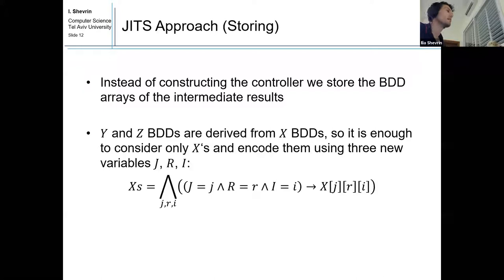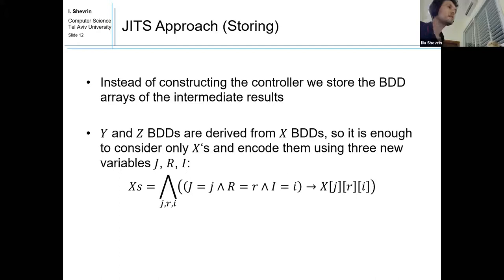Instead of constructing the controller, we store the BDD arrays of the intermediate results. We need to store Y, Z, and X. Y and Z BDDs are actually derived from X BDDs, as shown in the full paper. So it is sufficient to consider only X and encode them using new variables J, R, and I. Later, when JITS loads, we can extract each X BDD and compute Y and Z, giving us all the information needed for correct execution. This encoding is very efficient because X BDDs are very similar to each other, and the BDD exploits that for compact storage.